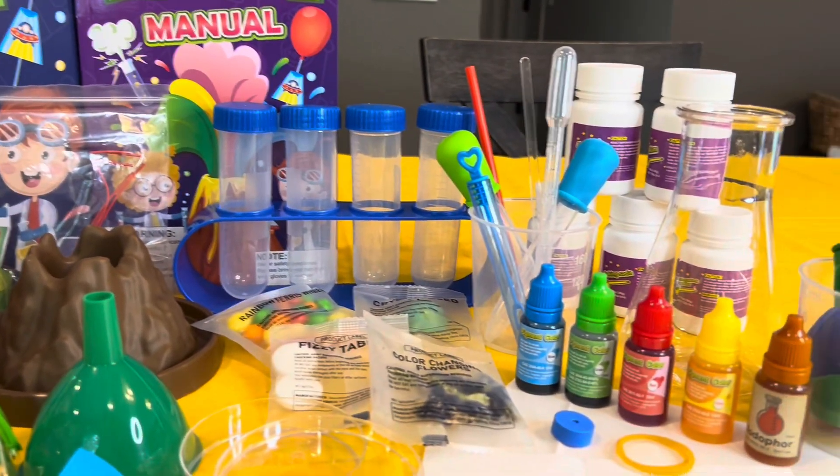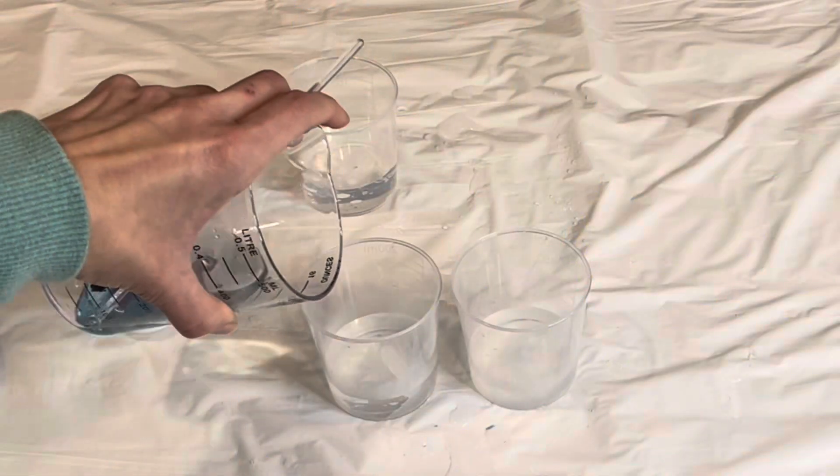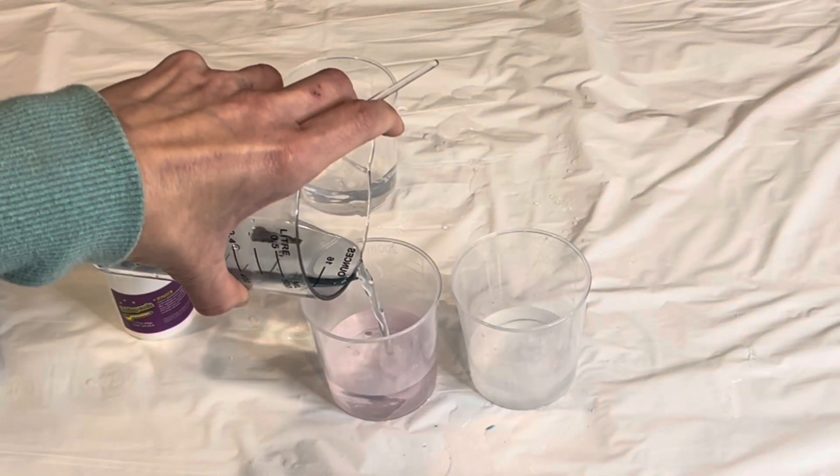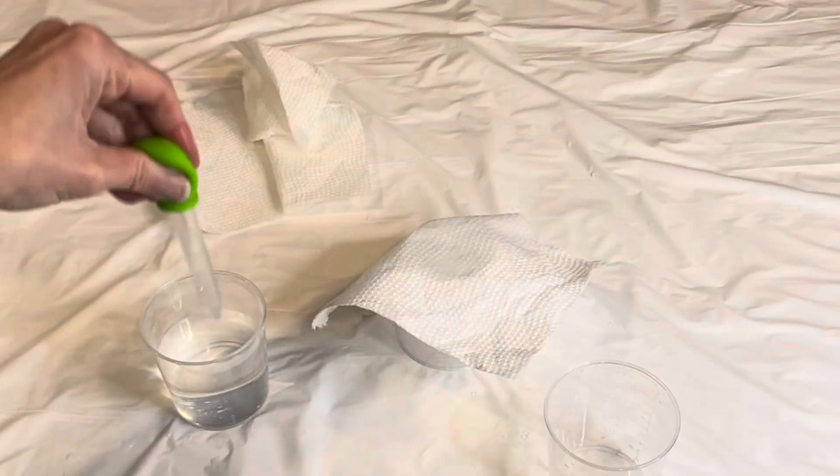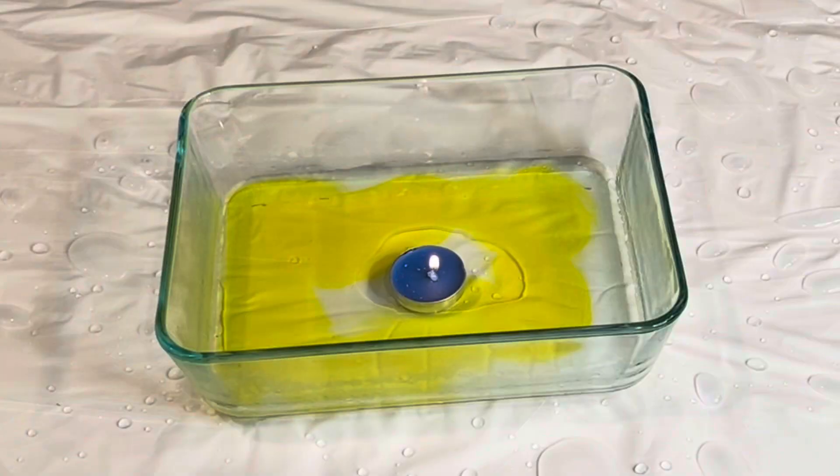This time I bought a kit made by Unglinga called 70 Science Experiments and to be honest with you it was actually pretty disappointing. It only came with the supplies to do about 20 experiments which is fine, it's just not what I was expecting based on the title.